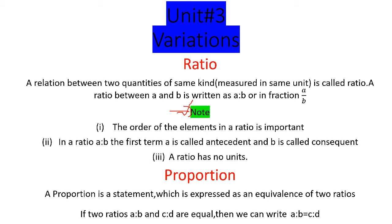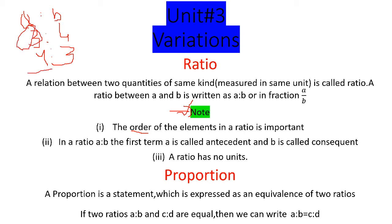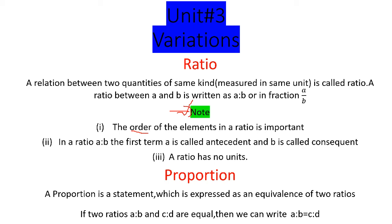Order یہاں ترتیب کو show کرتا ہے۔ Ratio کی ترتیب اہم ہے — اگر ایک amount 3:4 ہے تو یہ a:b کو show کرتی ہے جہاں a کی value 3 ہے۔ لیکن اگر آپ نے order چینج کرکے 4:3 لکھا تو a کی value 4 ہو جائے گی۔ اس لئے کہا جاتا ہے کہ 'the order of the elements in a ratio is important'۔